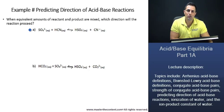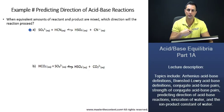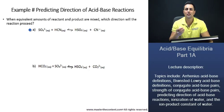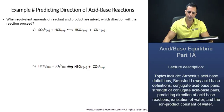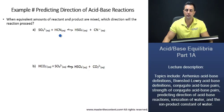it's always going to proceed in the direction towards the weaker acid and the weaker base. That's because stronger acids dissociate more than weaker acids. So what ends up happening is that the strong acid protonates the strong base, which leaves us with a weak acid and a weak base. To answer this question, first we'll identify the acids, then we'll identify the bases, and then we'll see in which direction the reaction proceeds.